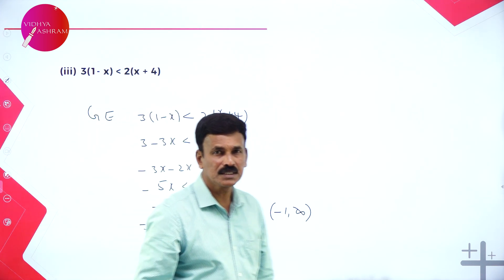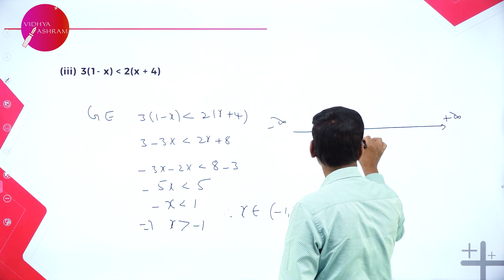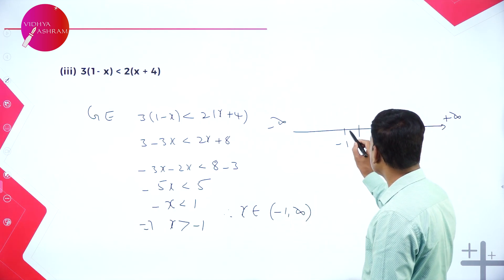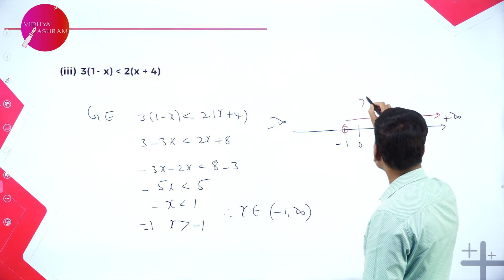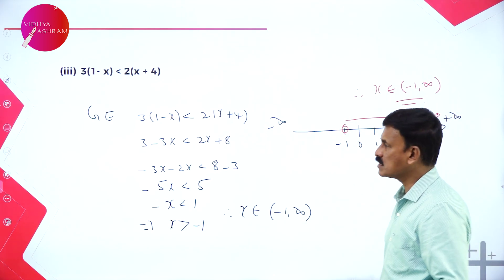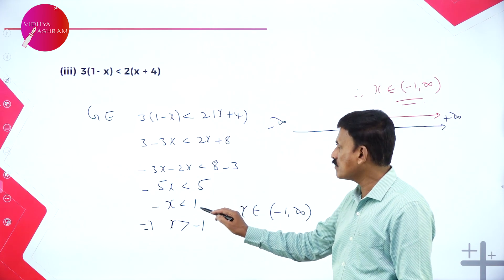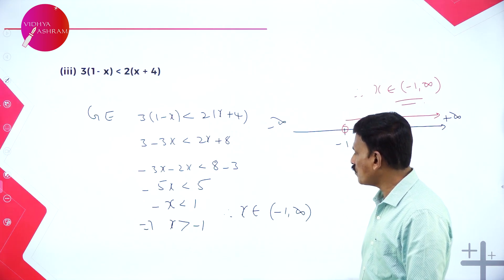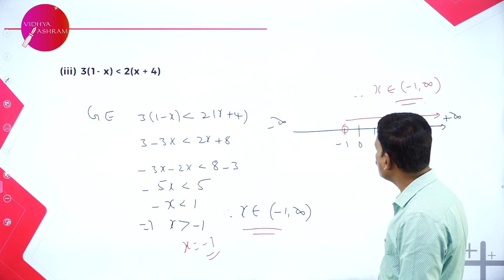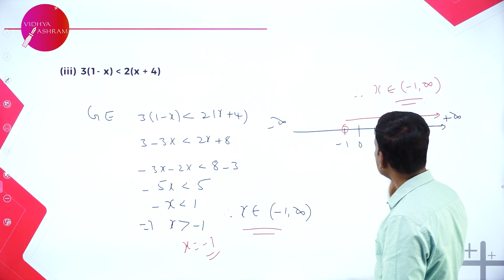On the number line, marking plus infinity, minus infinity, 0, 1, 2 and minus 1 — the solution set x ∈ (-1, ∞) is represented starting just after -1 extending to plus infinity. So x belongs to -1 to infinity is the solution of this inequality on the number line.